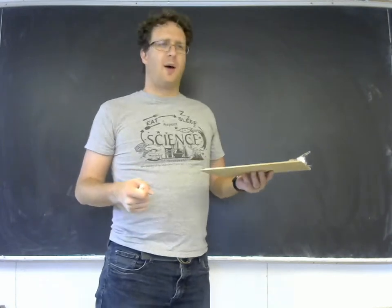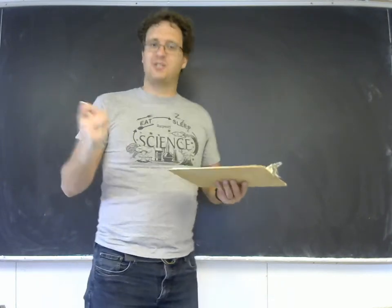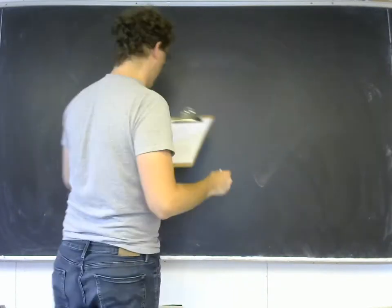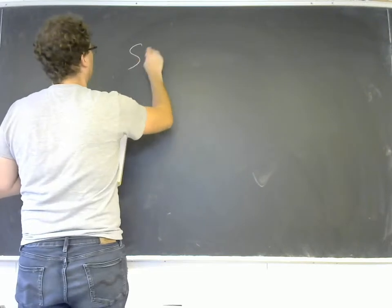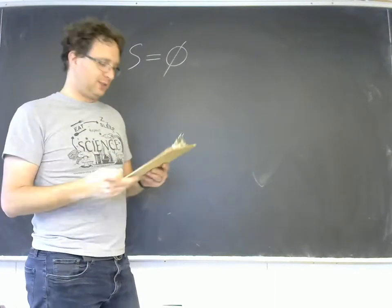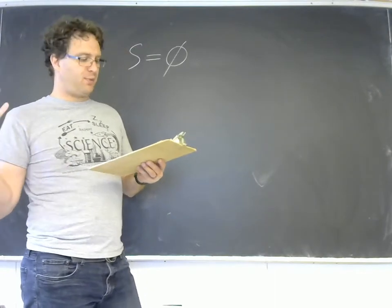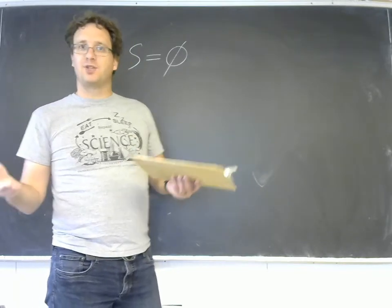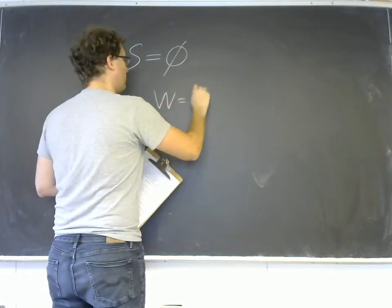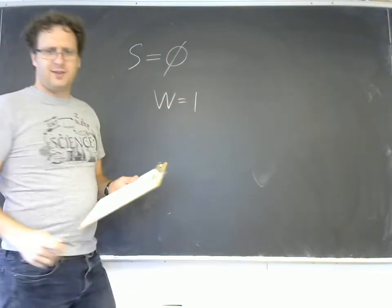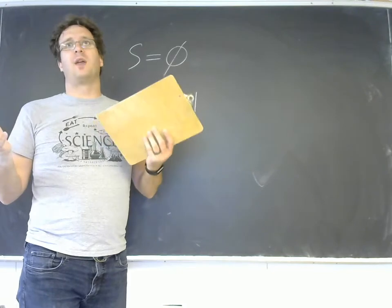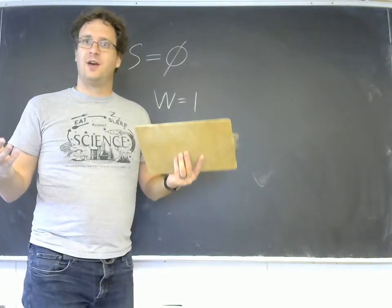In order to set the stage for that, we need to talk about the third law of thermodynamics. We already went over the first two. The third one defines a condition where the entropy of a system is actually equal to zero, and so it will be a perfectly ordered crystal at a temperature of absolute zero. For such a crystal, there would be only one microstate.